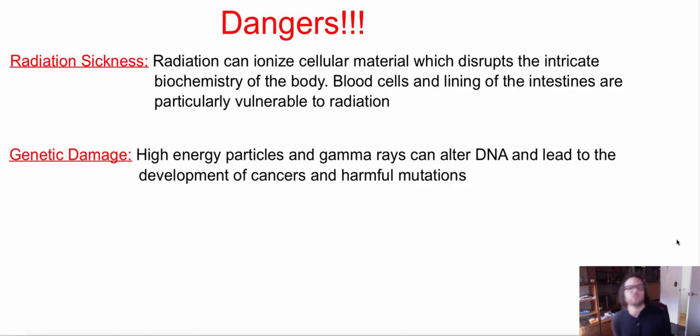So now let's go over some dangers of radiation. There are also some benefits to radiation, but right now we're just going to be looking at the dangers and you'll learn about some of the benefits later if you read your textbook. So radiation can cause radiation sickness, because radiation can ionize cellular material which will disrupt intricate biochemistry of the body. The blood cells and lining of the intestines are particularly vulnerable to radiation. So a lot of times this is when we're using alpha and beta. Then we also have something called genetic damage and that's if we have very high energy particles and gamma rays which can actually alter our DNA and cause harmful cancers and mutations in the future. Now one thing about this is when we hear of radiation, we are constantly exposed to radiation. We have radiation in nature all the time, but they are in low enough amounts that our body could heal itself from that radiation. But now it's when we have too much radiation is where we have many problems.